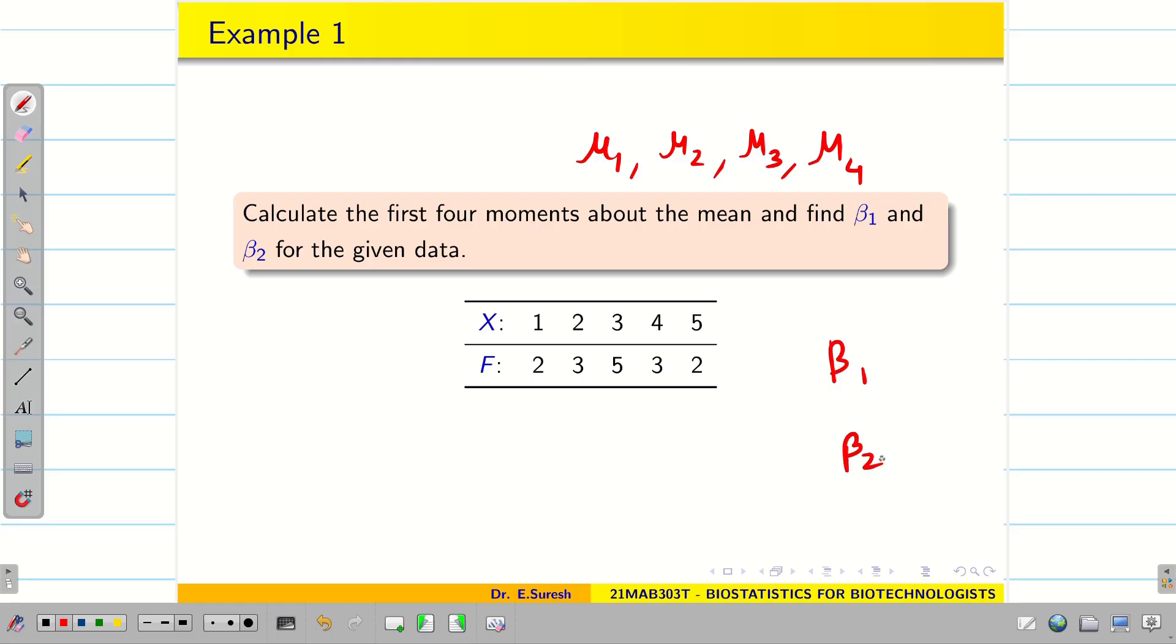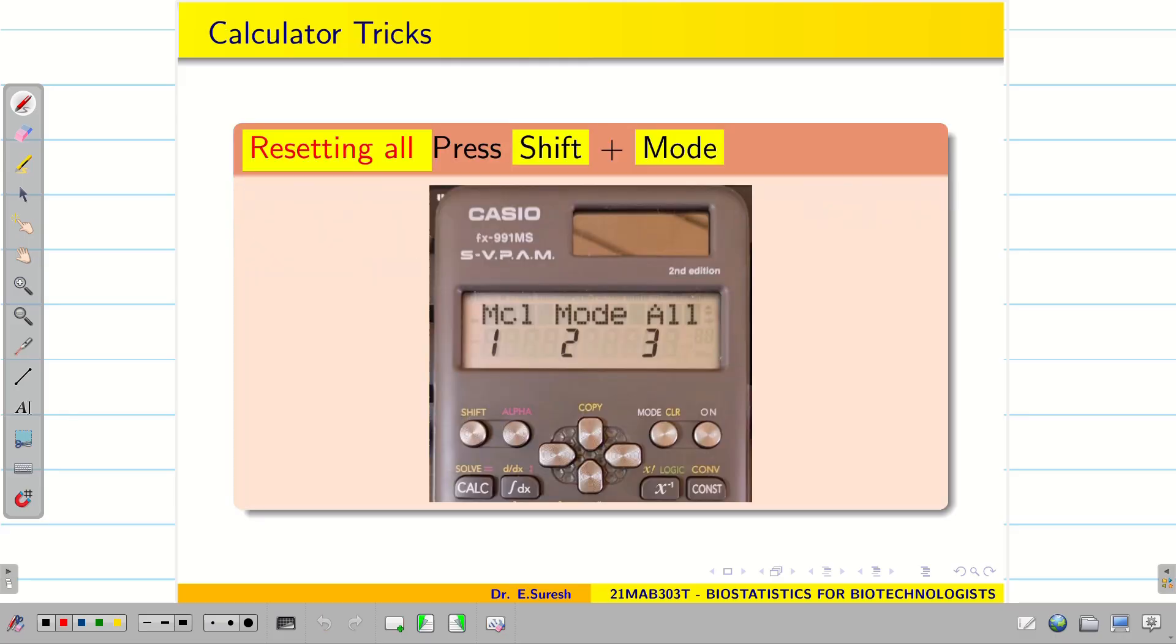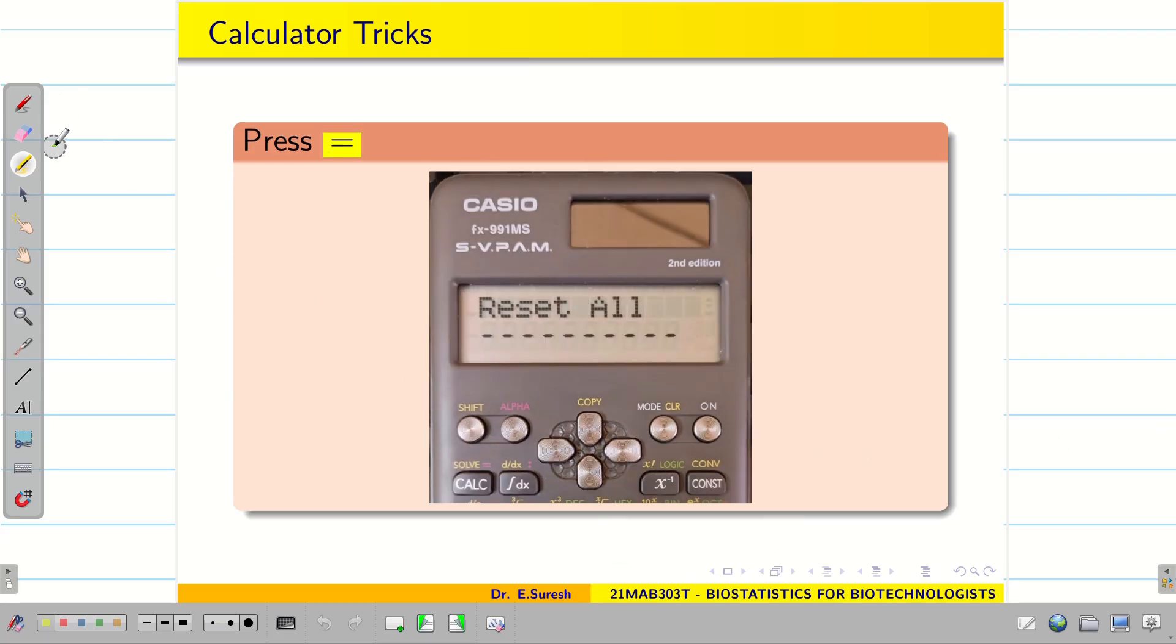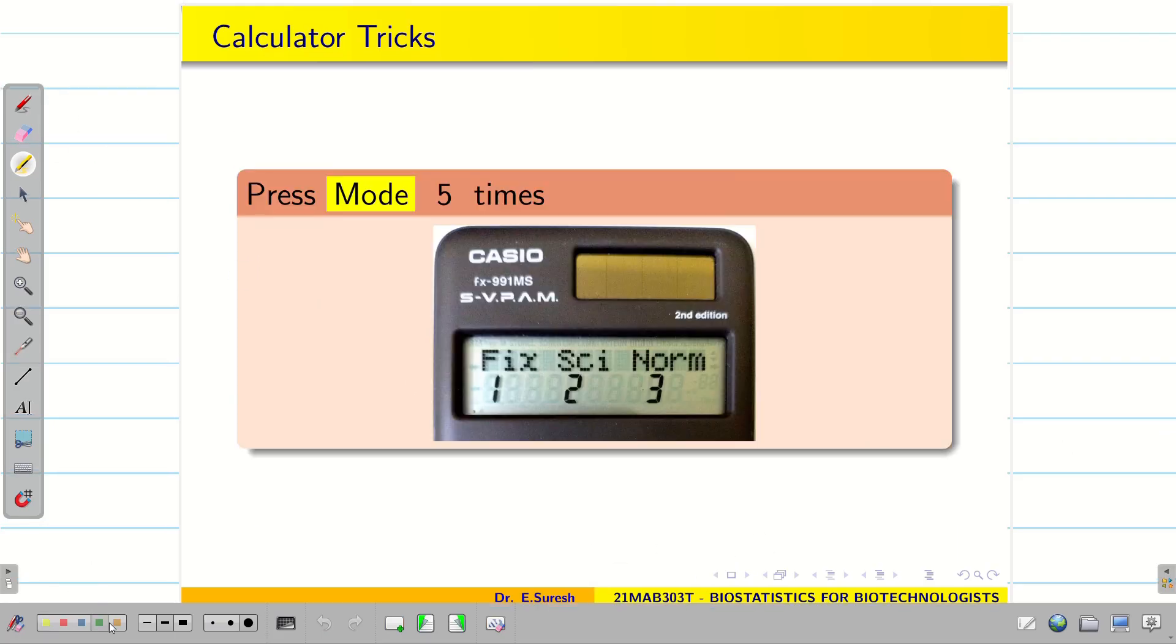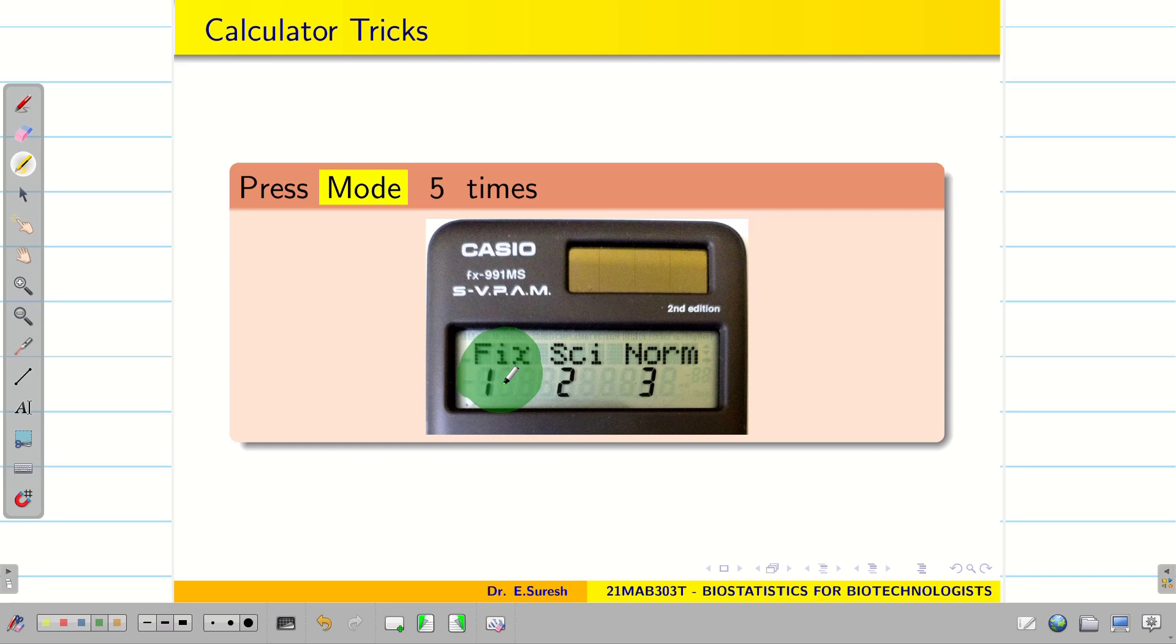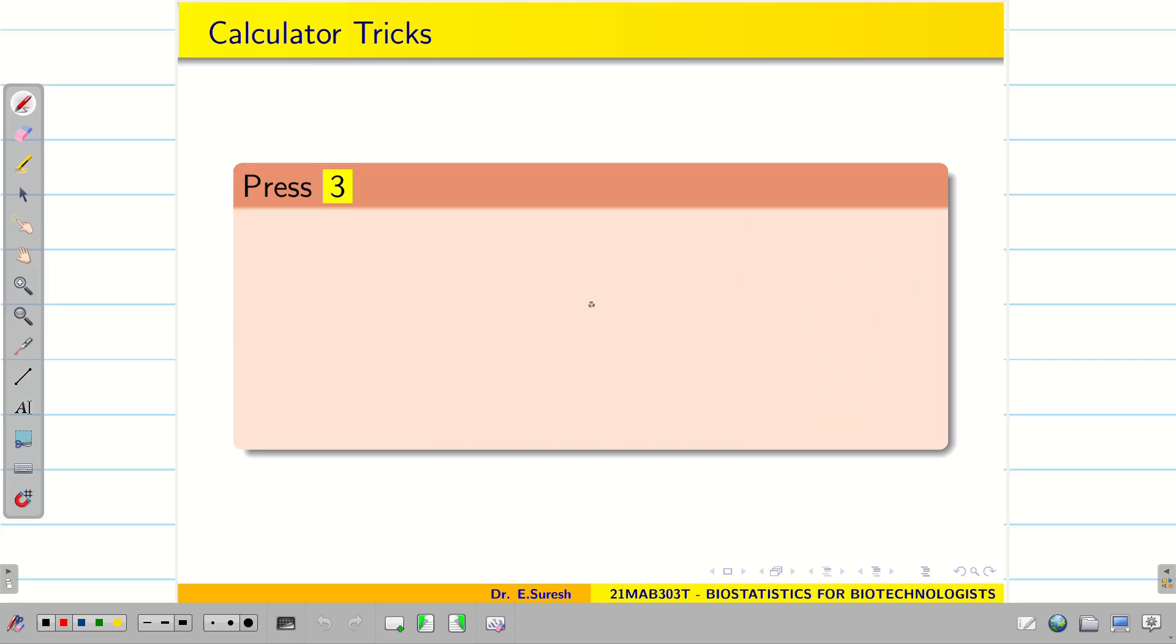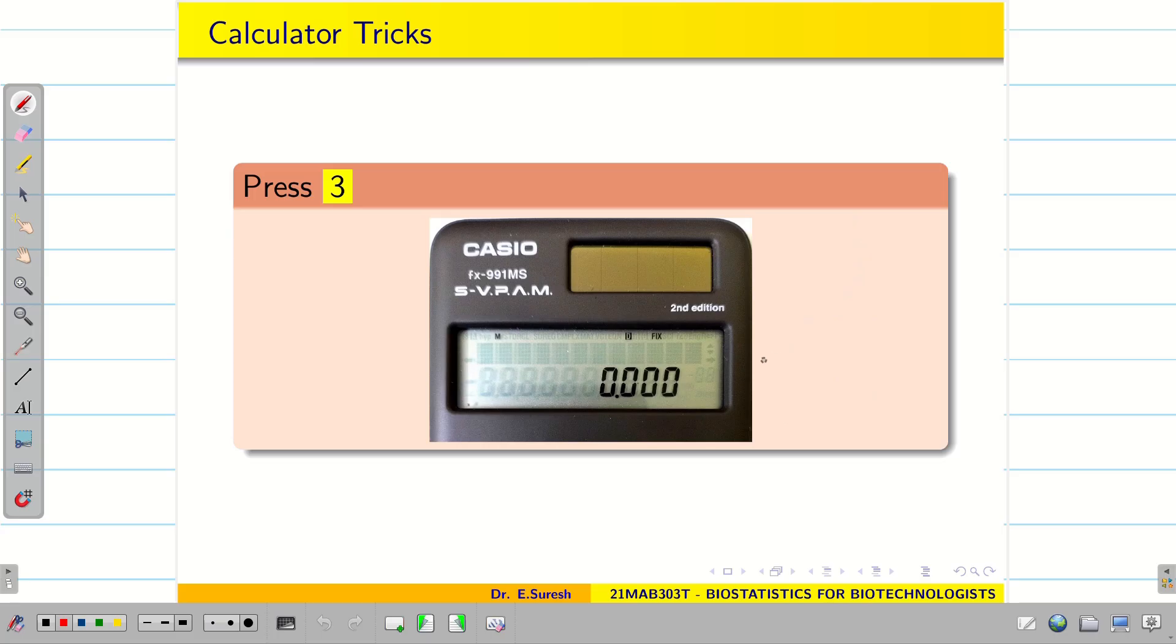Before we start the problem, as usual, take your calculator and make it ready. Press shift plus mode and then we have to choose 3. Clear all your memories. Press 3 and then press equal to twice. Your memory will be cleared. Next press mode for 5 times. You can see the display fix. We need to fix the decimal places. Now press 1 and then it shows 0 to 9. Choose 3. So now the calculator is fixed with 3 decimal places.